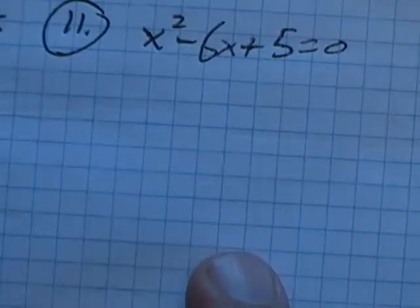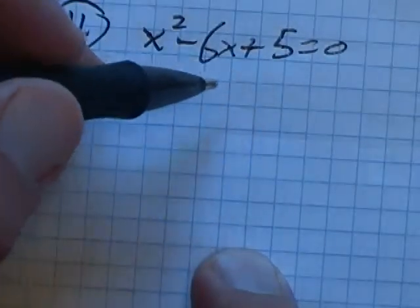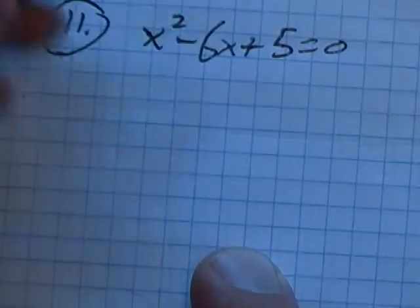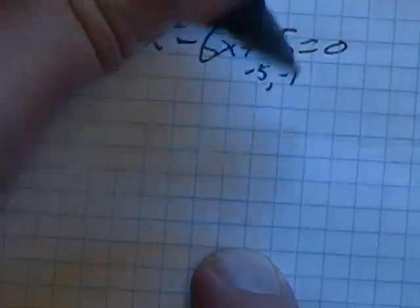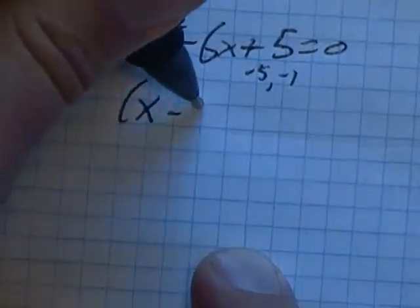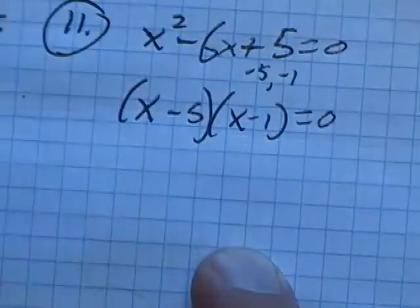I'm going to try and factor this. I need things that multiply to 5 but add to negative 6, and that would be negative 5 and negative 1. So this factors to (x - 5)(x - 1) = 0.